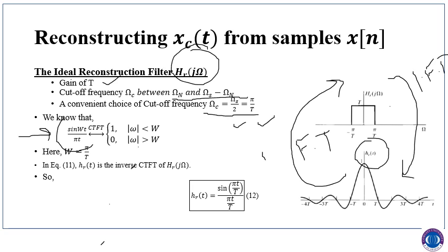So equation 11: h_r(t) is the inverse Fourier transform of H_r(jω). Simplifying and substituting ω = π/T, we get sin(πt/T) / (πt/T) × (1/T). This is a sinc function — the argument above and the argument in the denominator are the same, confirming the sinc form.